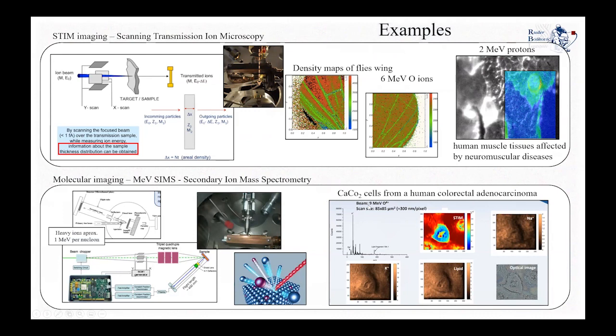Here in this picture, you see a study done with a 9 MeV oxygen beam having a total scan size of 85 micrometers, concerning the study of cells from human adenocarcinoma. You can see the maps obtained: density maps from STIM as well as maps from lipid molecules, combined with optical images. This way, one can get molecular maps.